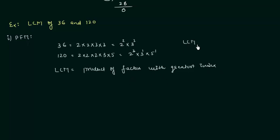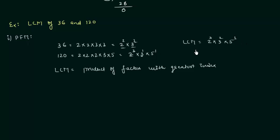So LCM will use factors 2, 3, and 5. Comparing the index of 2: the greatest is 3, so we take 2³. Comparing the index of 3: the greatest is 2, so we take 3². We have only a single 5 with index 1, so we take 5¹. Therefore LCM = 2³ × 3² × 5¹ = 360. LCM of 36 and 120 is 360.